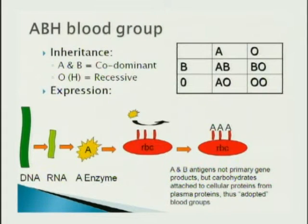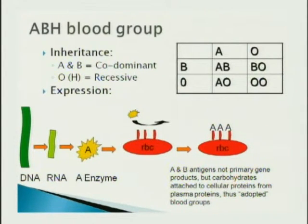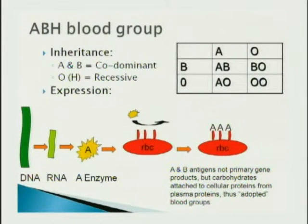More specifically, it's called the ABH blood group system. It's a carbohydrate blood group system, different from most others. A and B are codominant; O is recessive, meaning you have no copy of A or B. How ABO works: your DNA codes for an enzyme, not a membrane protein directly. If you have the gene for A, you make an A enzyme that adds the A sugar to the H backbone. So A and B antigens are not primary gene products — they're adopted blood groups.